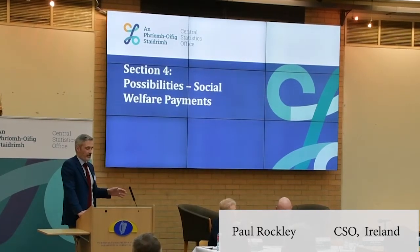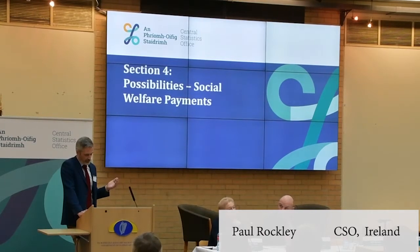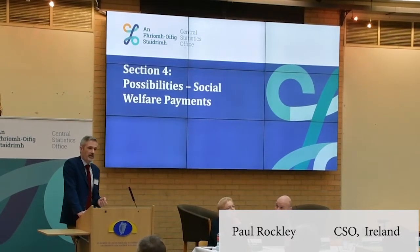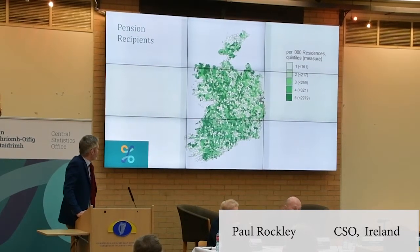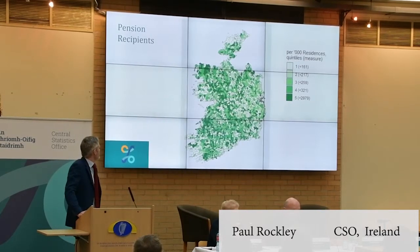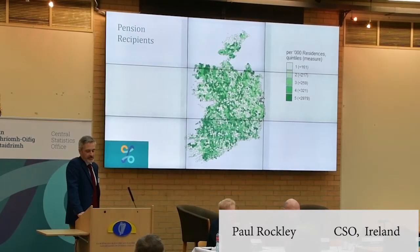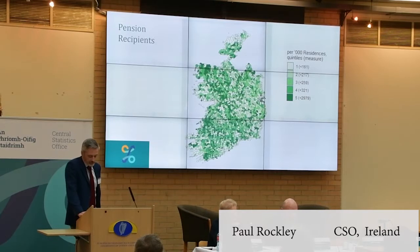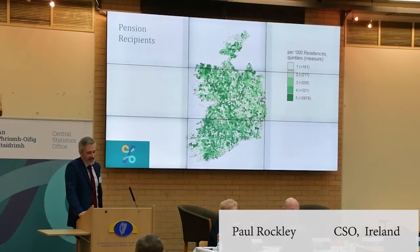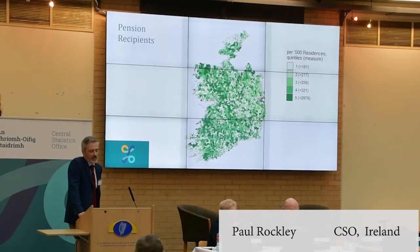I'm going to show you a few maps. All of the counts are the number of recipients receiving the given benefit, and they are standardized across the EDs by the number of residential delivery points as taken from GeoDirectory. The first example is pension recipients in the state — that shows 3,400 EDs divided into quintiles. The darker the color, the more pensioners you have in that area as a proportion.